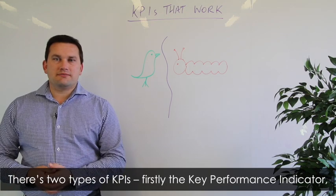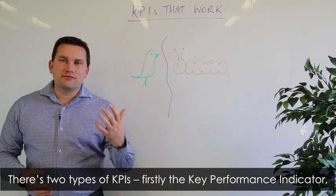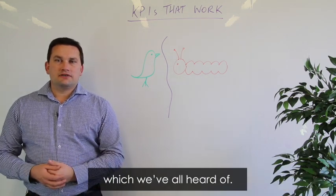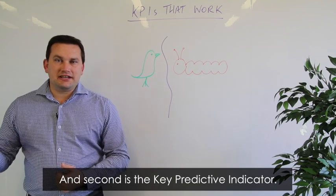And so there are two types of KPIs. Firstly the key performance indicator, which we've all heard of, and then second is the key predictive indicator.